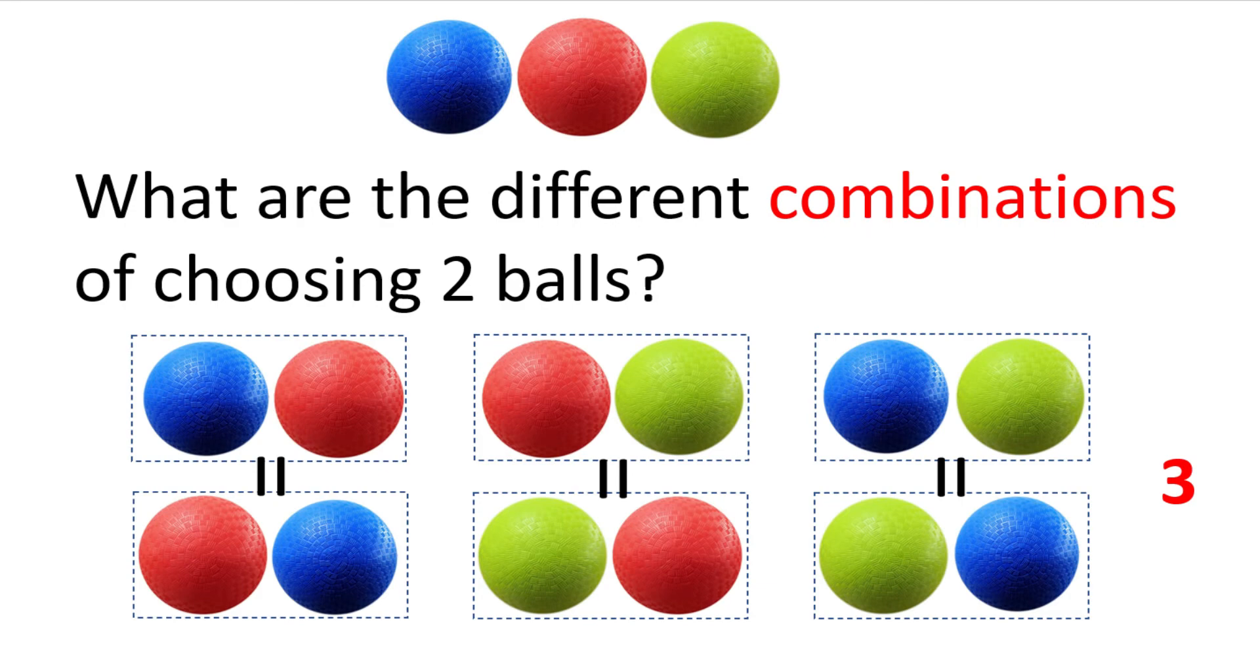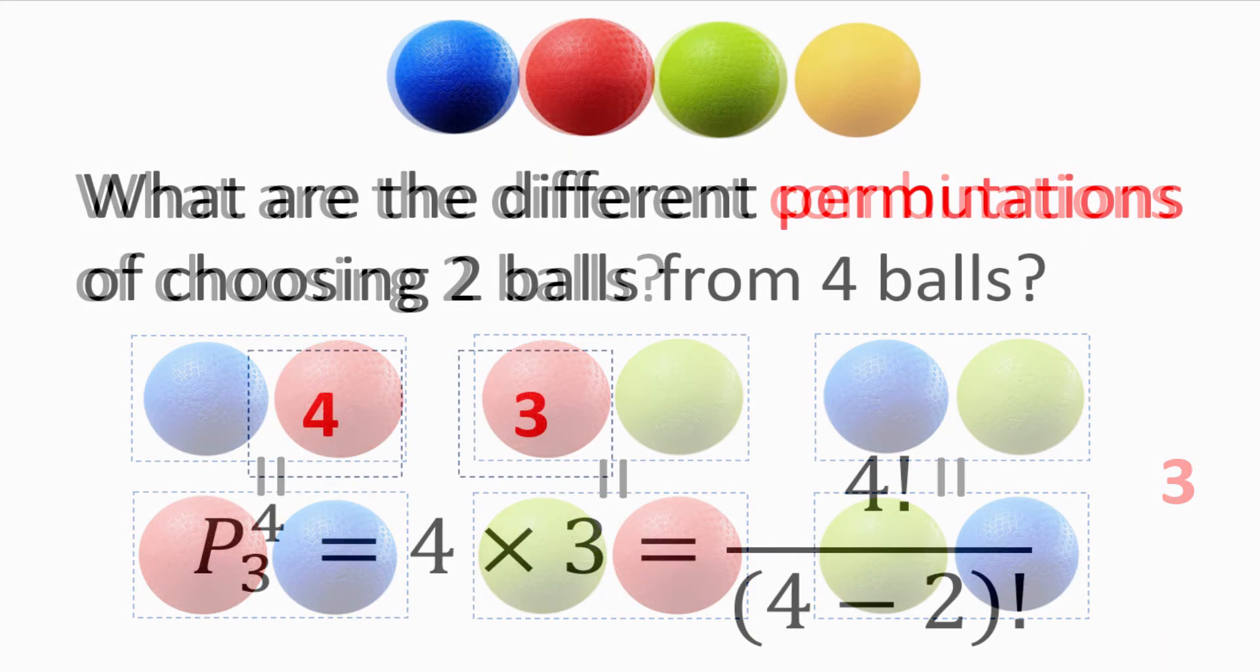Now, instead of permutations, what are the different combinations of choosing two balls? In this case, we do not care the order in which we pick the balls, so the blue then red and the red then blue set are just the same group. In total, we see there are effectively only three total combinations. Hopefully, now it is clear what is the difference between permutation and combination.